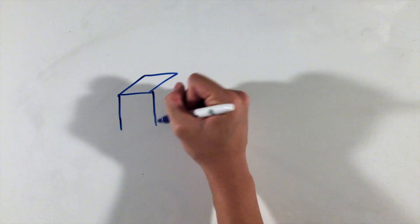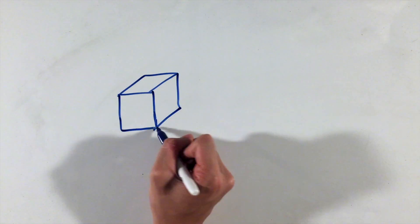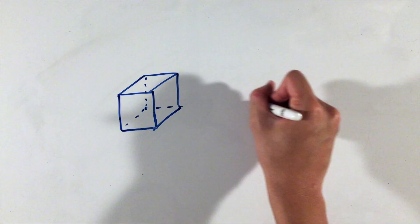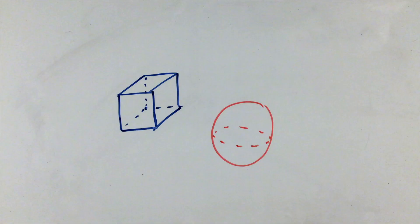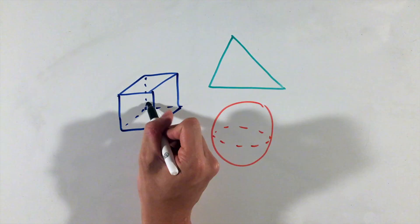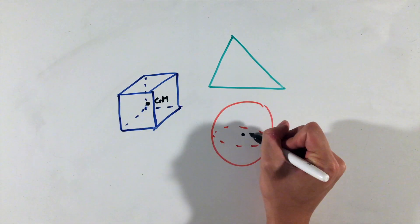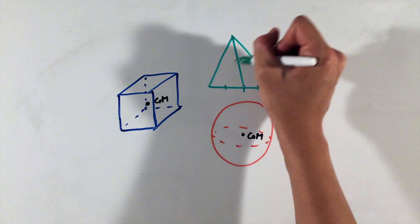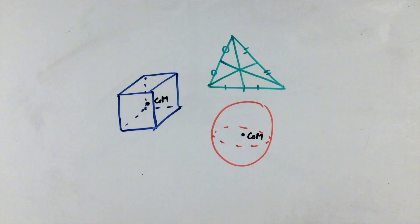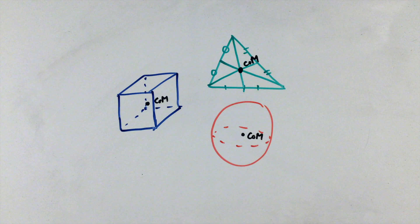For uniformly dense geometric objects like a ball, cube, square, or triangle, the location of the center of mass is simply the geometric center of the object. This means the center for circular or square objects and the centroid or intersection of medians for triangular objects.